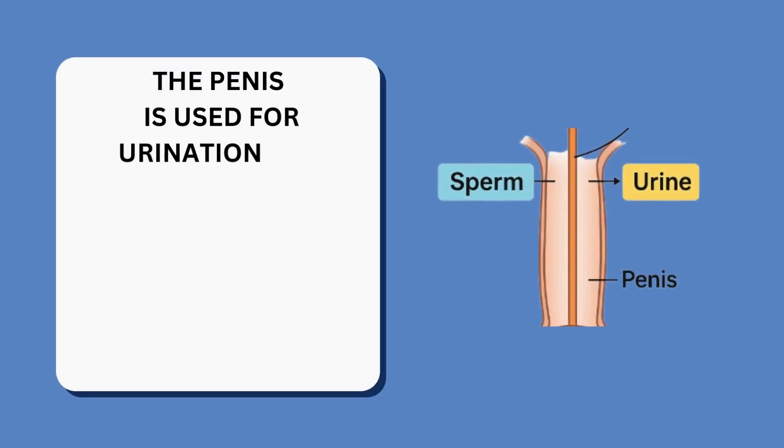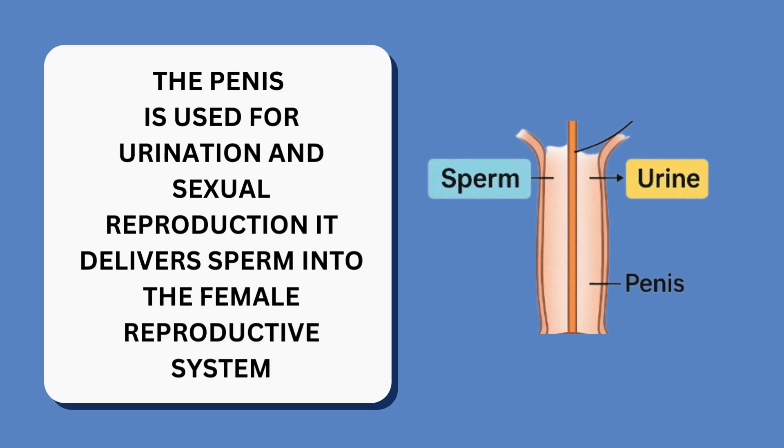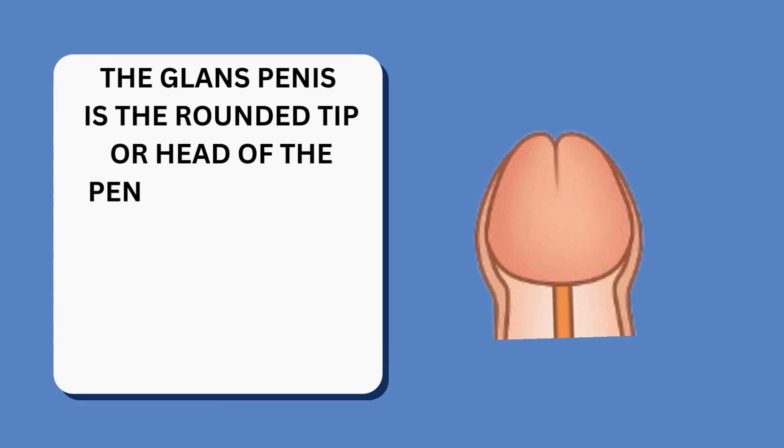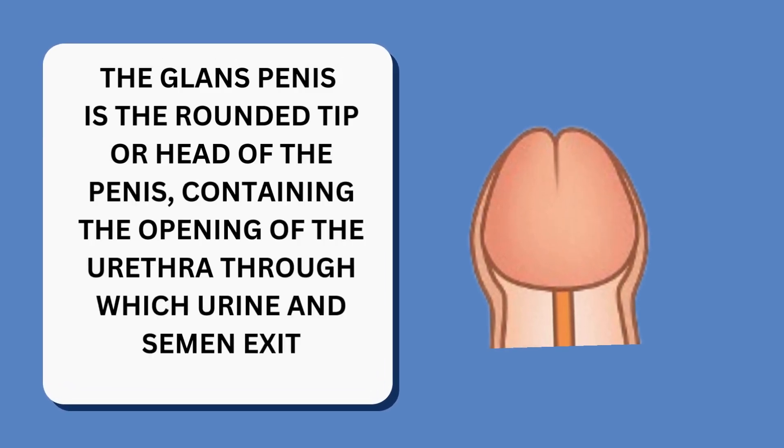The penis is used for urination and sexual reproduction. It delivers sperm into the female reproductive system. The glans penis is the rounded tip or head of the penis, containing the opening of the urethra through which urine and semen exit.